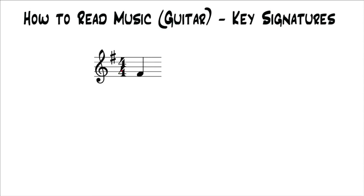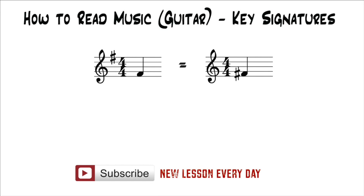So that means if you were to see this right here, which this key signature is telling you that all the Fs are F sharps, which would mean that this note right here, which is an F, is actually an F sharp, not just an F natural, that would be the same thing as if it was written like this.